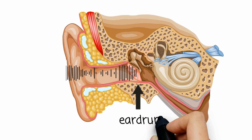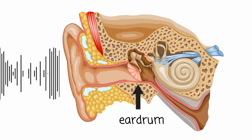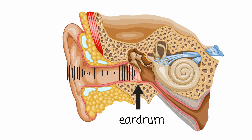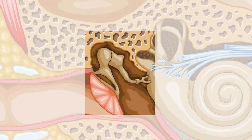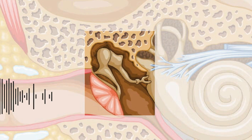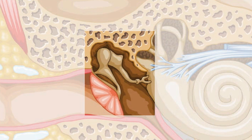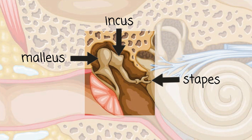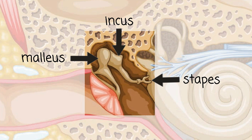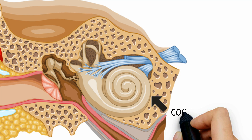This movement of the sound makes the small membrane called the eardrum vibrate. These vibrations are transmitted to the ossicles located in the middle ear. The ossicles are the smallest bones in the human body. They are composed of the malleus, which transmits the vibrations to the incus, then to the stapes, which acts as a piston that compresses the fluid of the inner ear.